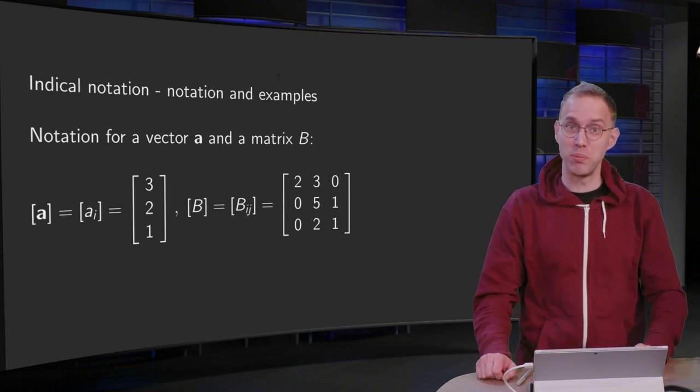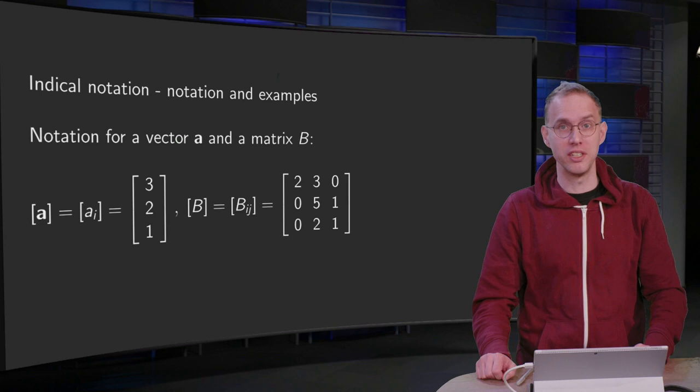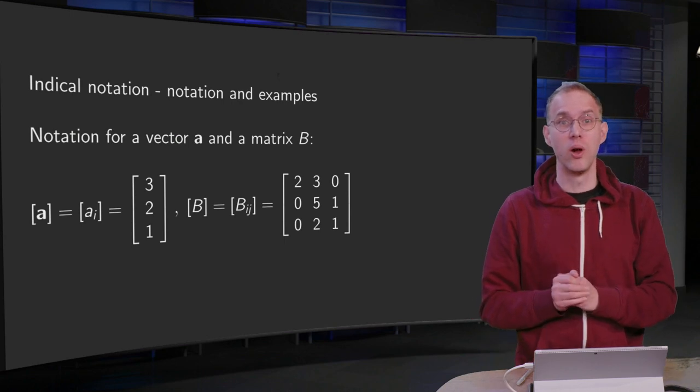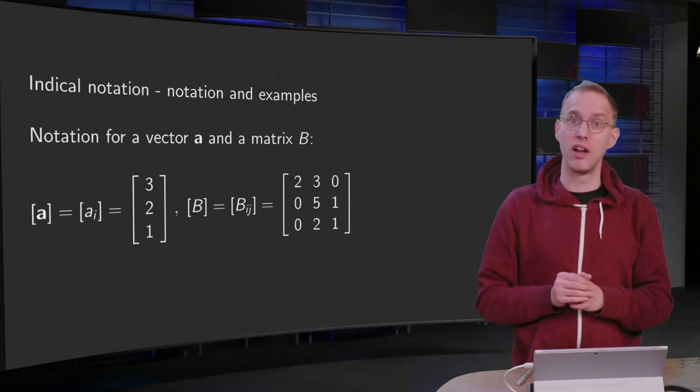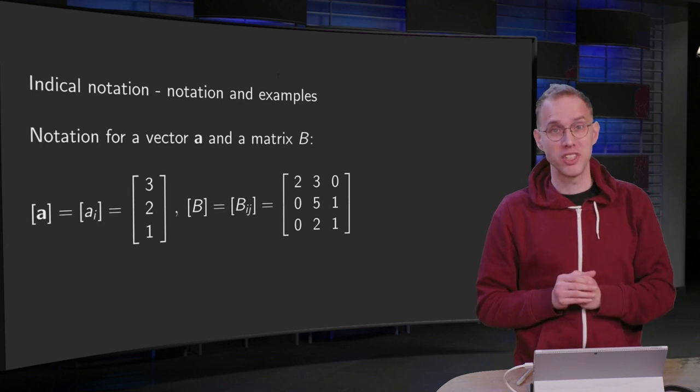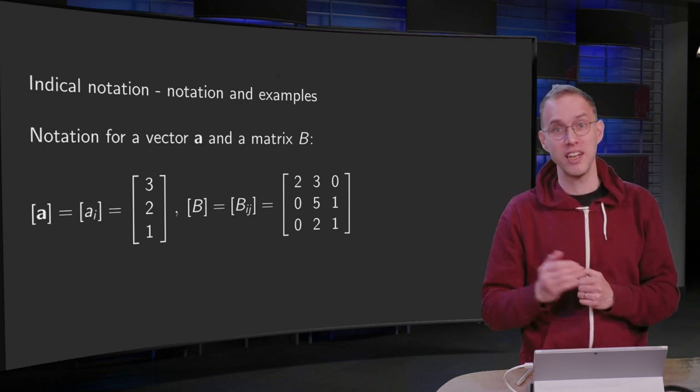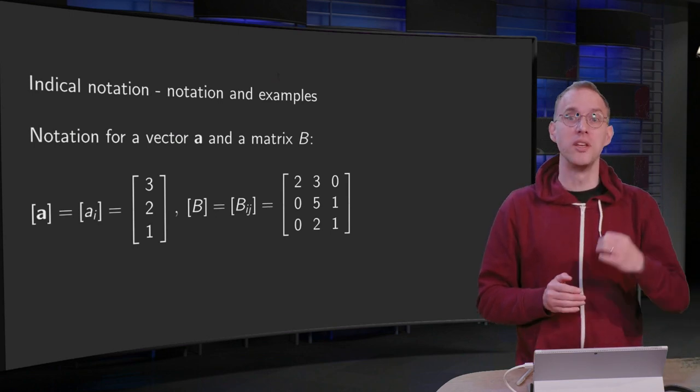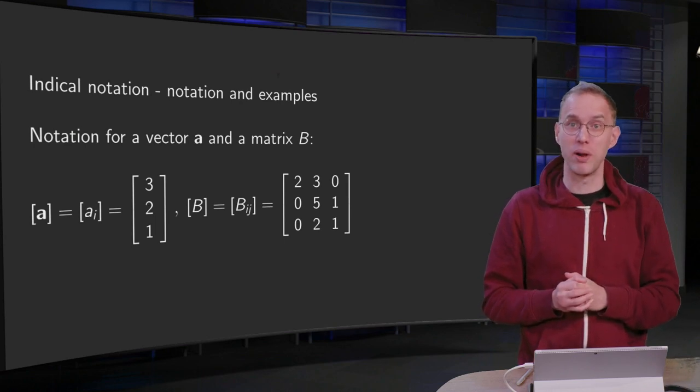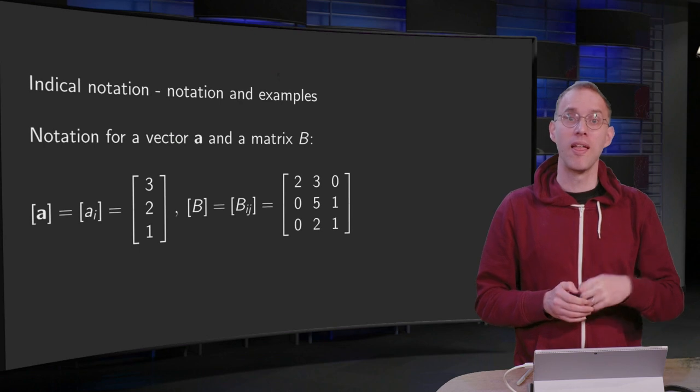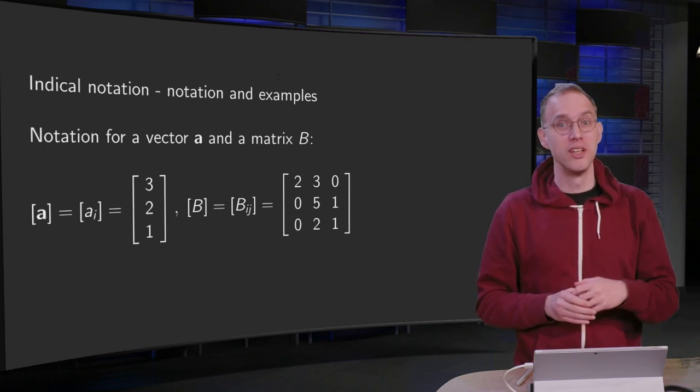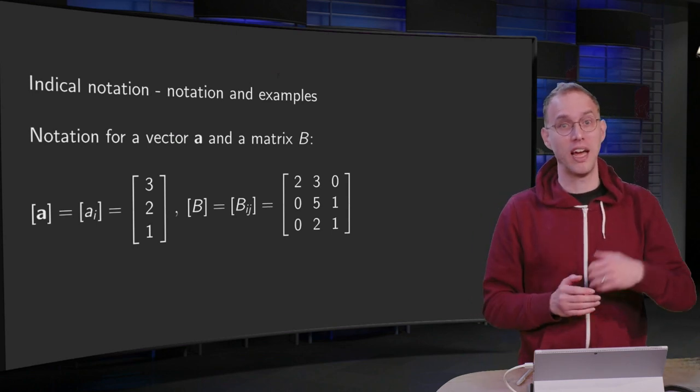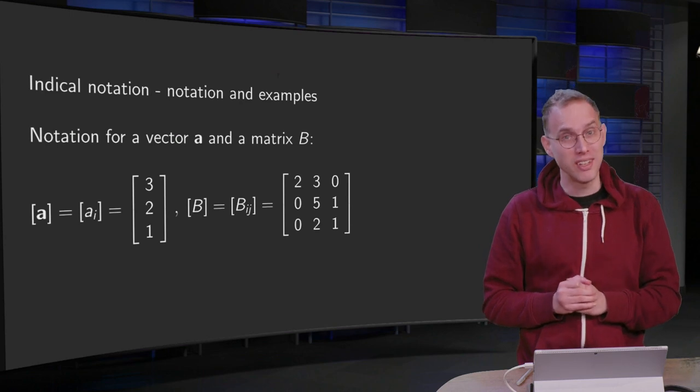If we want to do some explicit computations with indicial notation, we have to specify what a1, a2, and a3 are, or what b11, b12, etc. are. Often these numbers are seen as components of a vector if you have one index, or elements of a matrix if you have two indices. This is how we will specify our ai and bij in this video, and then we will notice something interesting. Using indicial notation, we'll see that we are effectively computing matrix products and inner products.